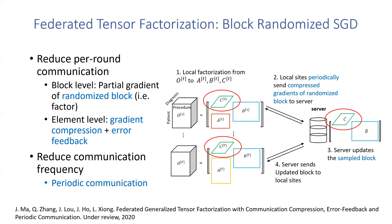To mitigate the impact, we use the error feedback mechanism, which records the residual compression error from previous rounds and feeds it back to the gradient for update.